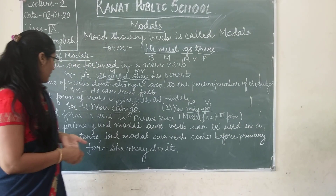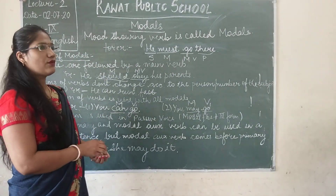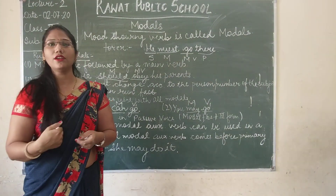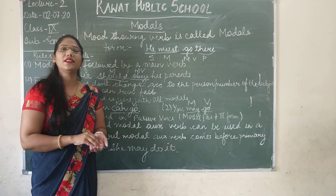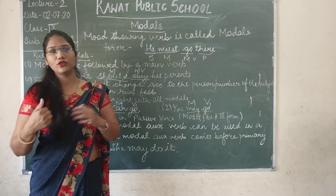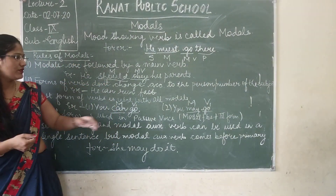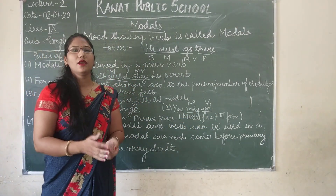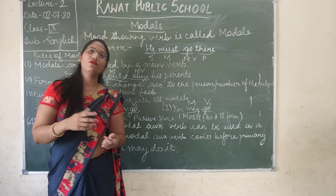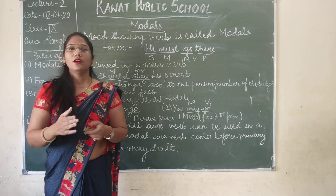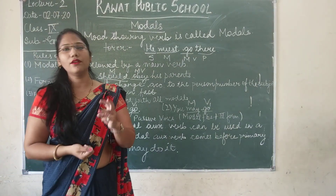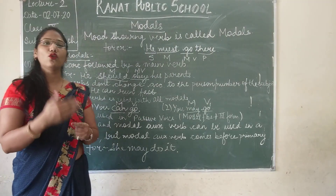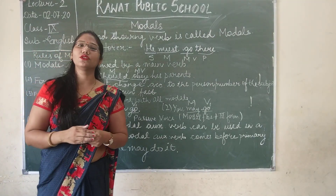The third form of the verb is used in passive voice. When we convert an active sentence to passive, we use: modal + be + third form of the verb. For example, for 'go,' the forms are go, went, gone — so in passive voice we use 'gone,' the third form.